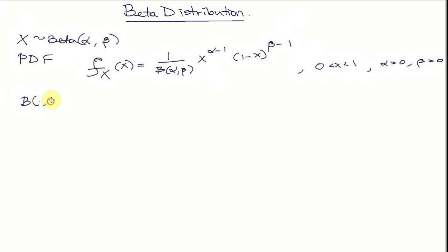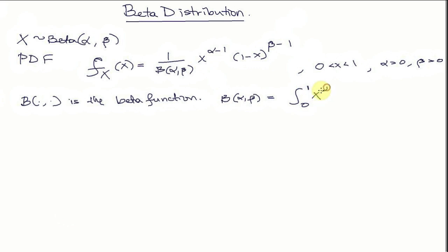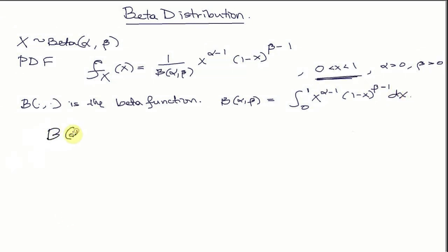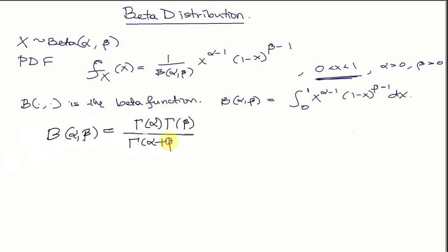The denominator is a beta function, and it is defined as beta of alpha comma beta equal to the integral from 0 to 1 of x to the power of alpha minus 1 times 1 minus x to the power of beta minus 1 dx. Sometimes you will see the PDF of the beta distribution written using the gamma function, because beta of alpha comma beta is equal to gamma of alpha times gamma of beta divided by gamma of alpha plus beta.